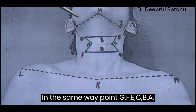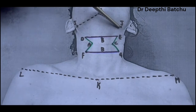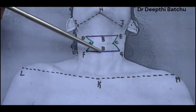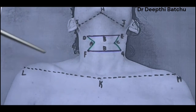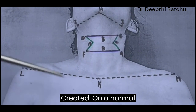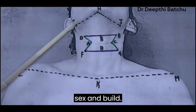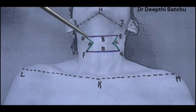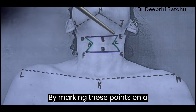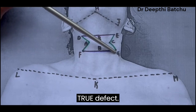The arc is intersected by another arc from the symphysis mentee to form point D. In the same way, points D, A, F, E, C, and G are created on a normal individual of the same age, sex, and build. By marking these points on a normal individual, it gives the idea of apparent defect.